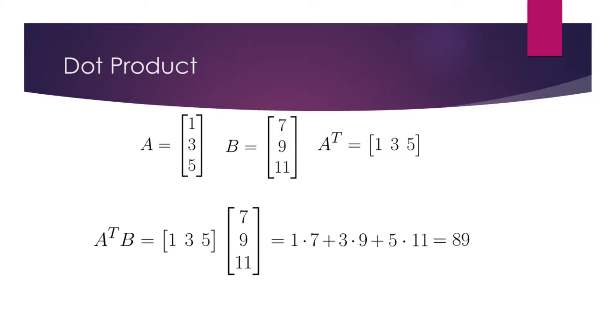Dot product is an operation which, given two vectors of equal length, outputs a scalar value.